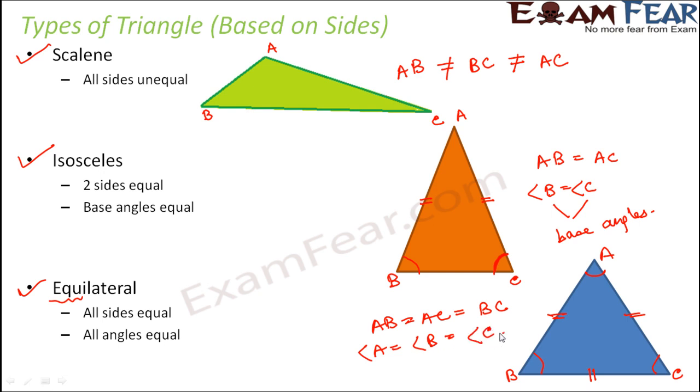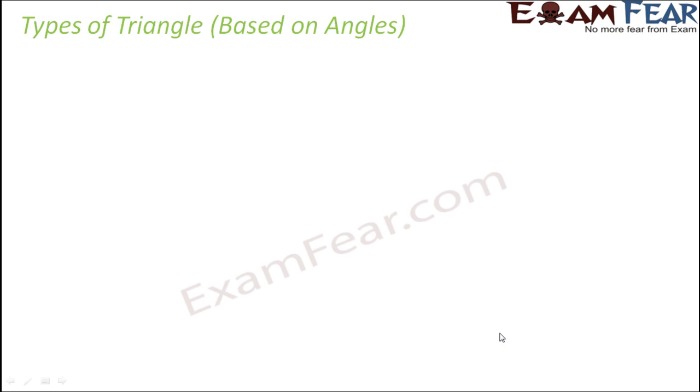So based on the length of the sides, whether the sides are equal or unequal, triangles are divided into scalene, isosceles and equilateral triangles. Now let us look at the types of triangles based on the angles, based on their value.